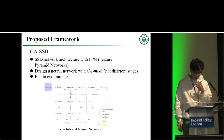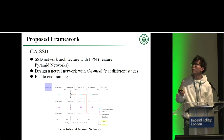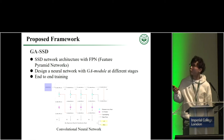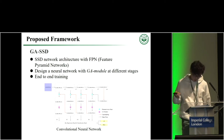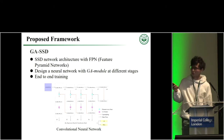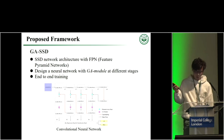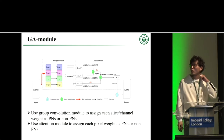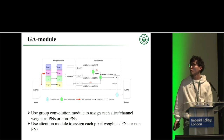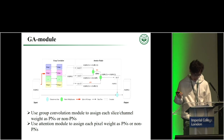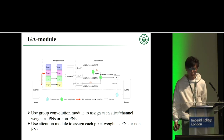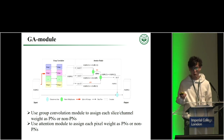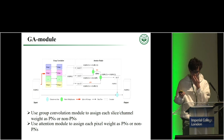We further propose our framework: the group attention SSD with FPN. It is a one-stage, single-shot framework with an attention module using group attention. To solve the problem of unbalanced data, we use a group convolution module to assign each slice and channel a weight as PNs or non-PNs. We also use the attention module to assign each anchor weight as PNs or non-PNs.